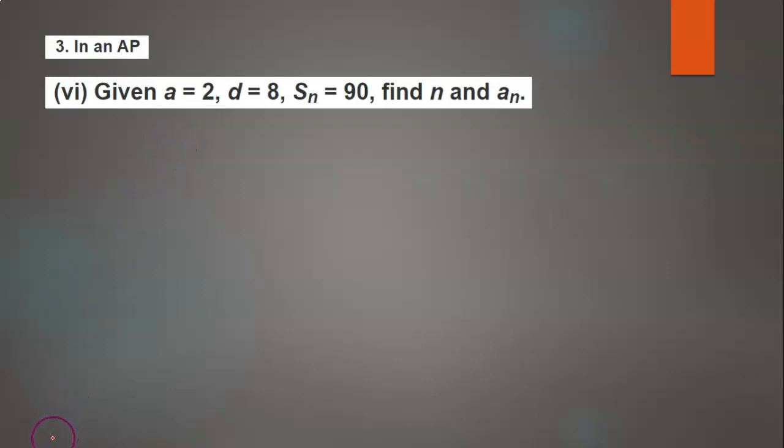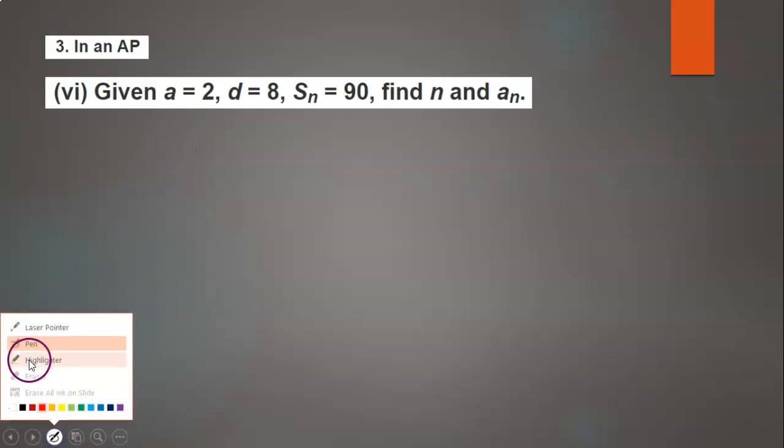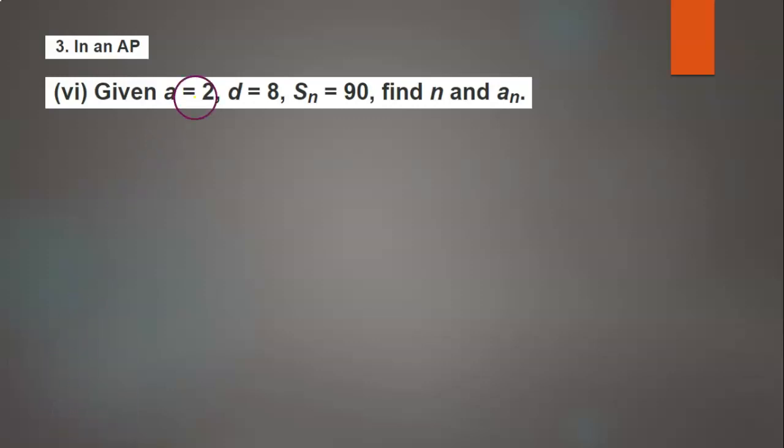Hello to everyone. Welcome back to our channel. Today's question is: In an AP, given a equals 2, d equals 8, and Sn equals 90, find n and an.